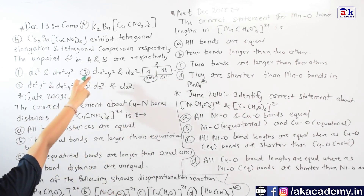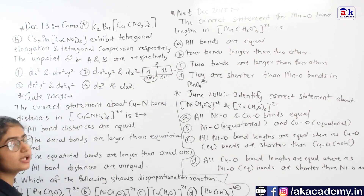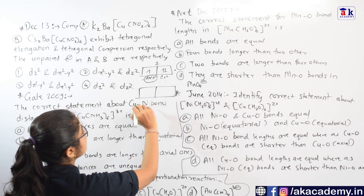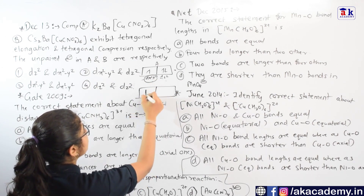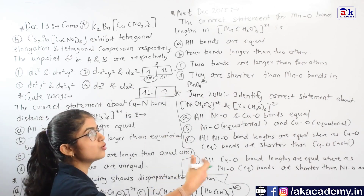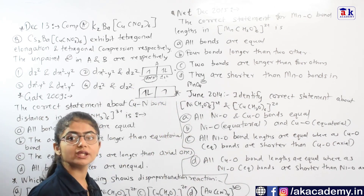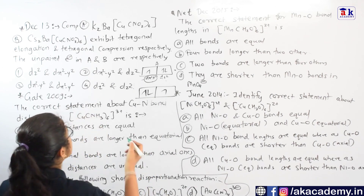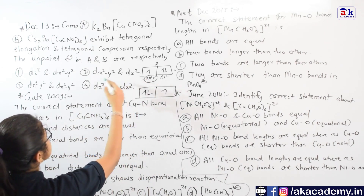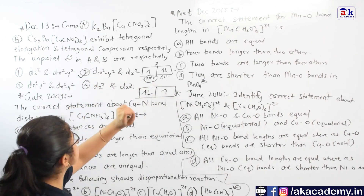Compound B exhibits tetragonal compression. For compression to take place, dx²-y² should have more electron density, so the unpaired electron is going to be in the dz² orbital. Therefore, the unpaired electron is in dx²-y² for A and dz² for B.